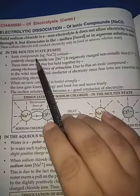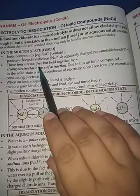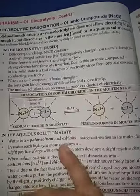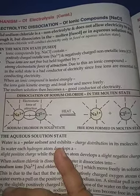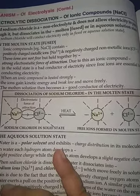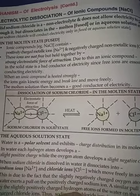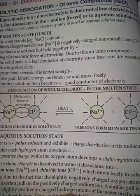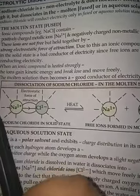In the molten state, the ionic compound NaCl contains Na⁺ and Cl⁻ ions, but these ions are not free — they are held together by strong electrostatic forces of attraction. Due to this, an ionic compound in the solid state is a bad conductor of electricity, since for conduction of electricity we need free ions, and ions are not free in the solid state.